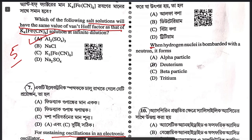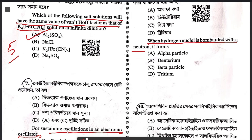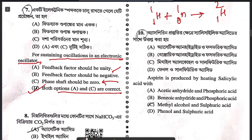Question 9: when a hydrogen nucleus is bombarded with a neutron, it forms — very simple — ¹H¹ + ⁰N¹ will form ¹H², that means deuterium.